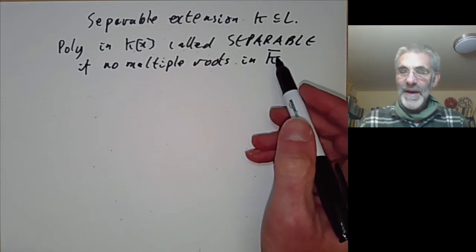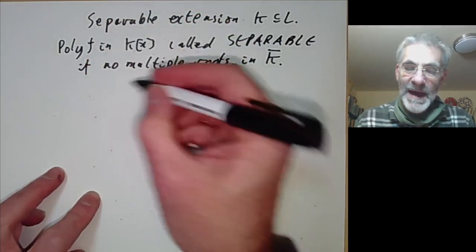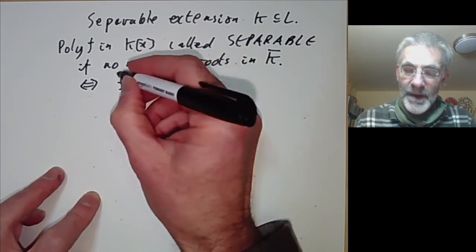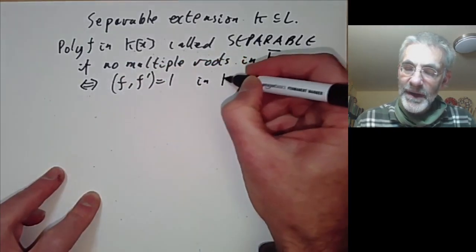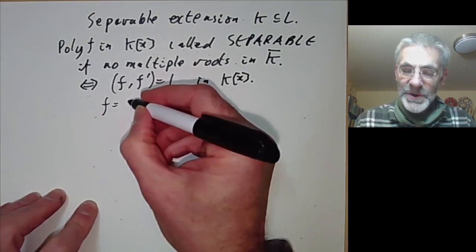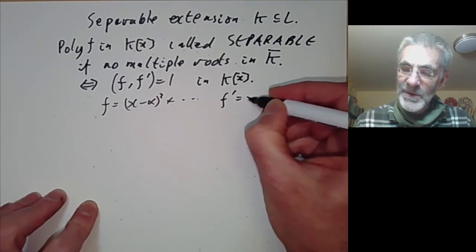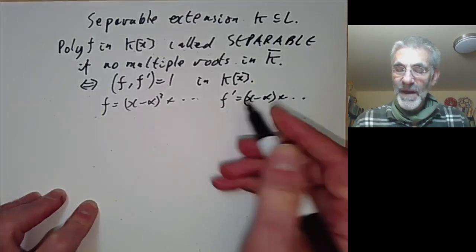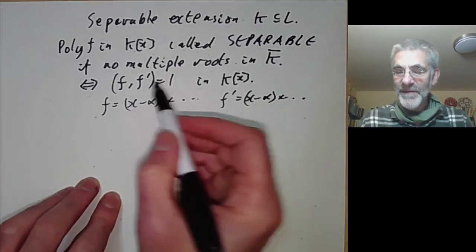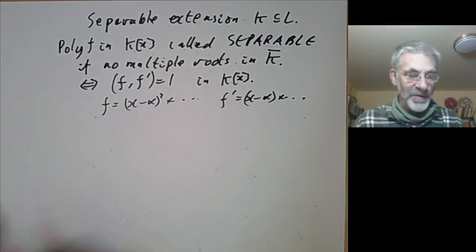This doesn't depend on any choice of algebraic closure because if the polynomial is F, this is equivalent to saying that F and its derivative are co-prime in the ring K[x]. For example, if F equals (x − α)² times something, then the derivative is (x − α) times something, so F and its derivative are not co-prime over the algebraic closure and therefore not co-prime in K[x]. You can also show the converse very easily.